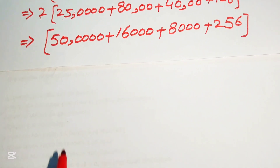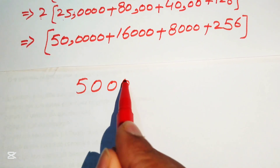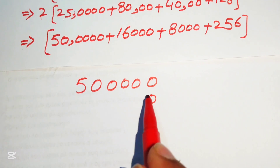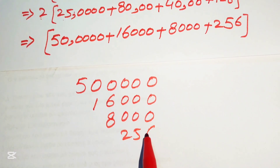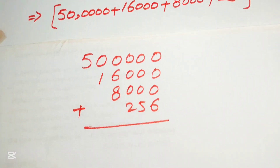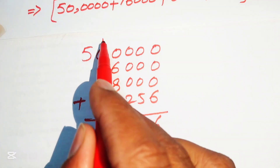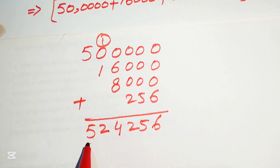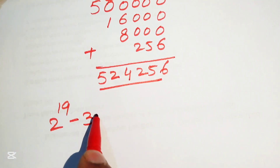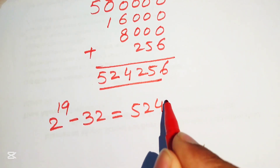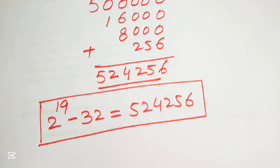After this step, we add all the numbers using the traditional method of addition: 500000, 16000, 8000, and 256. Adding these: 6, then 5, then 2, then 8 plus 6 is 14 — write 4 and carry 1, giving 1 plus 1 is 2, then 5. So the final simplified form of 2 to the power of 19 minus 32 equals 524256. Thank you for watching this video. Please subscribe to my channel for more exciting videos.